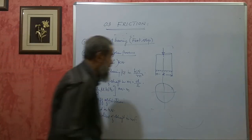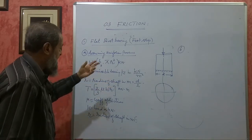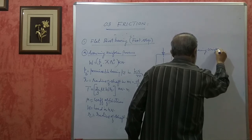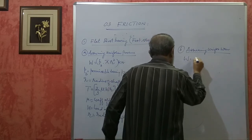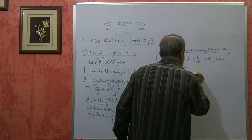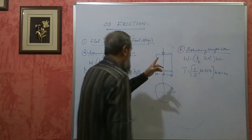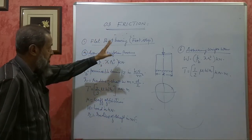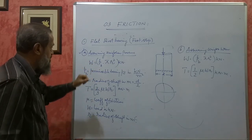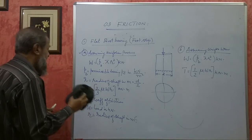Assuming uniform wear for a flat pivot bearing: W = Pb × πR² (same formula), but T = (1/2) × μ × W × R in kNm. Generally in bearings we assume uniform pressure because friction is undesirable. In clutches, uniform wear is assumed because friction is desirable. If they ask assuming uniform wear, you have to use the second formula.